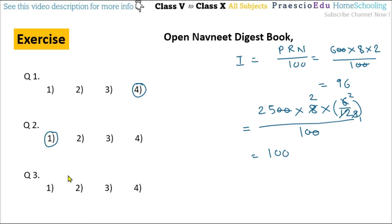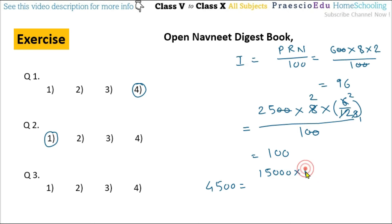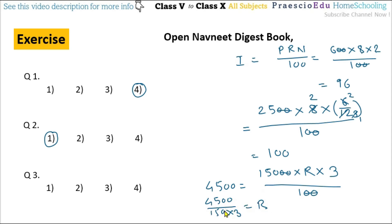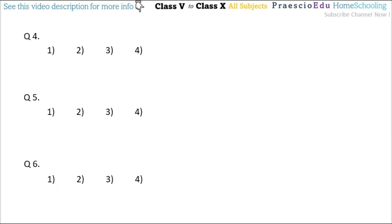Question number 3: Rahul gave ₹15,000 to Santosh for 3 years. Santosh gave him ₹4500 as interest. What is the rate of interest? So 4500 = 15000 × R × 3 / 100. The two zeros cancel, giving 4500 / (150 × 3) = R. Further simplification gives R = 10%. So option number 1 is correct.